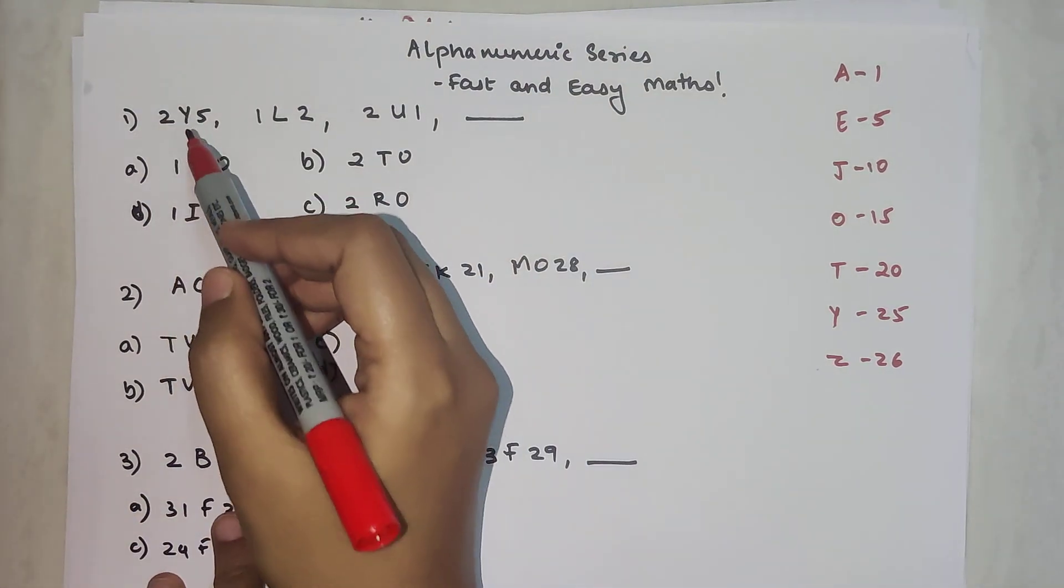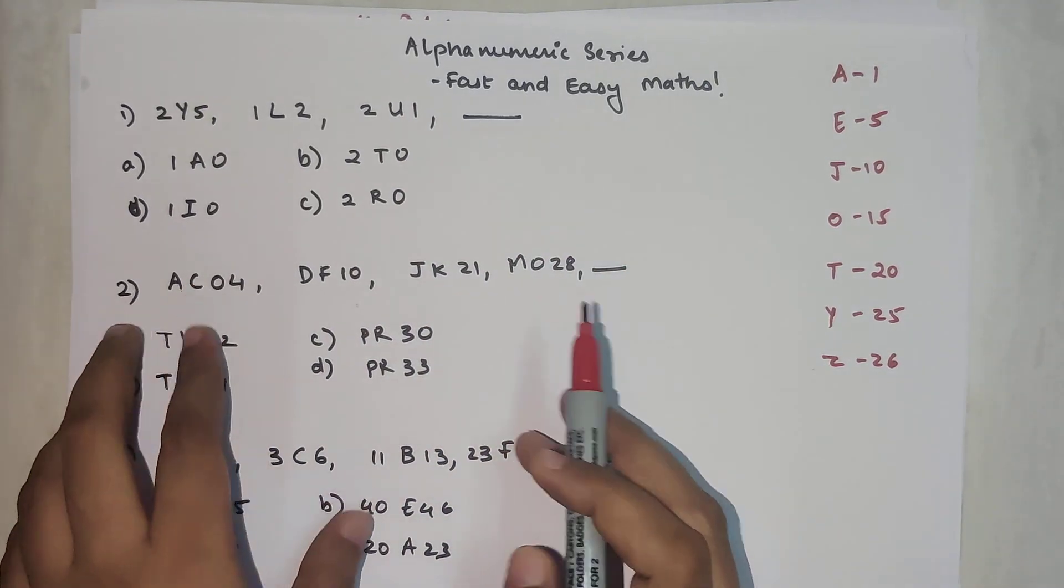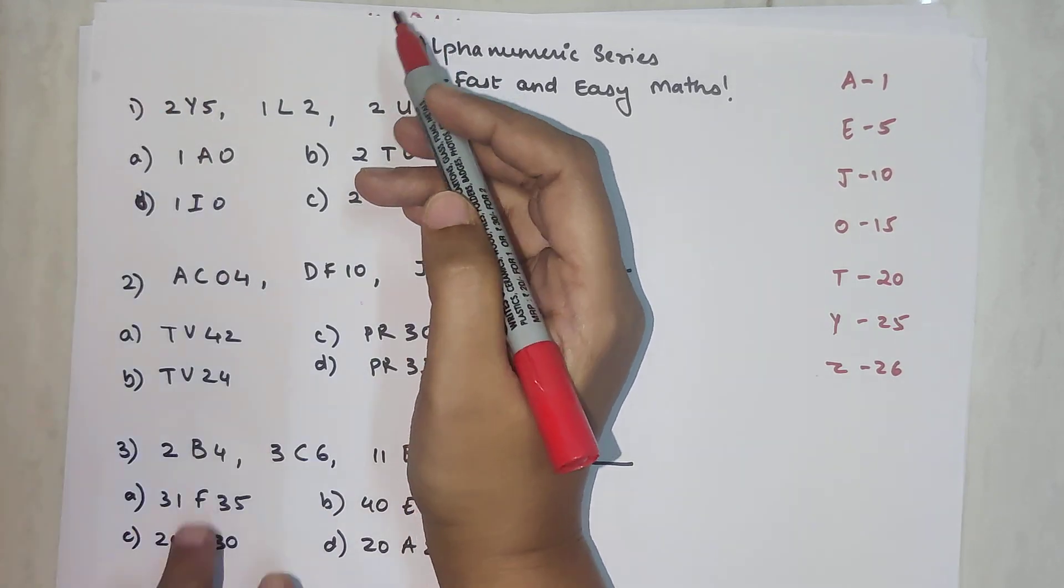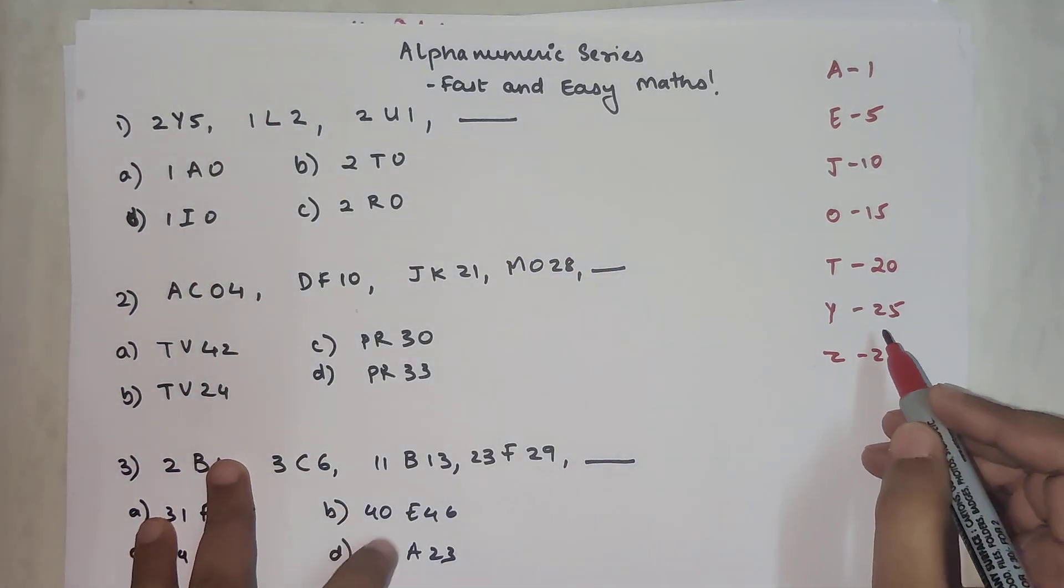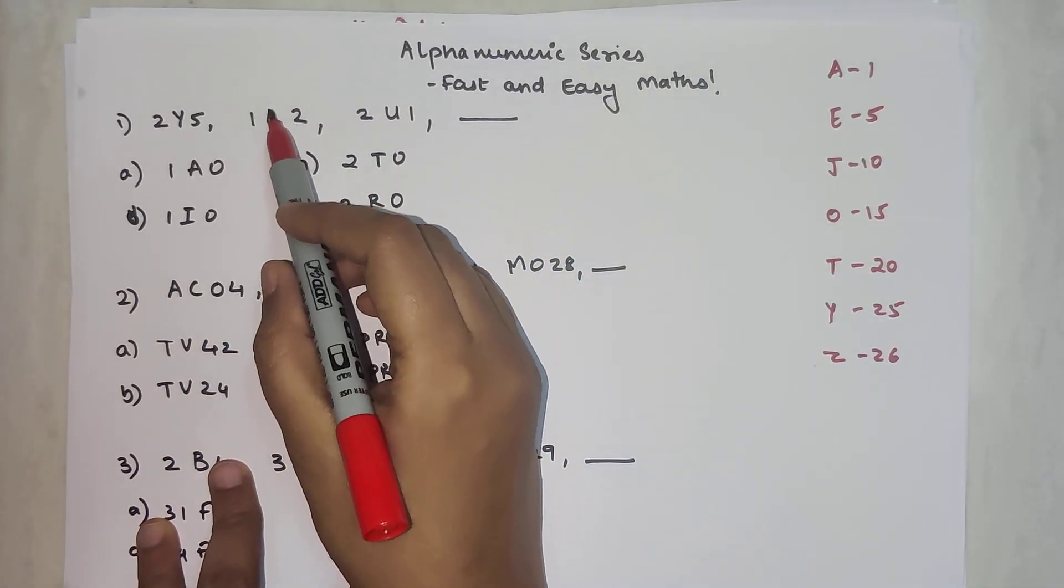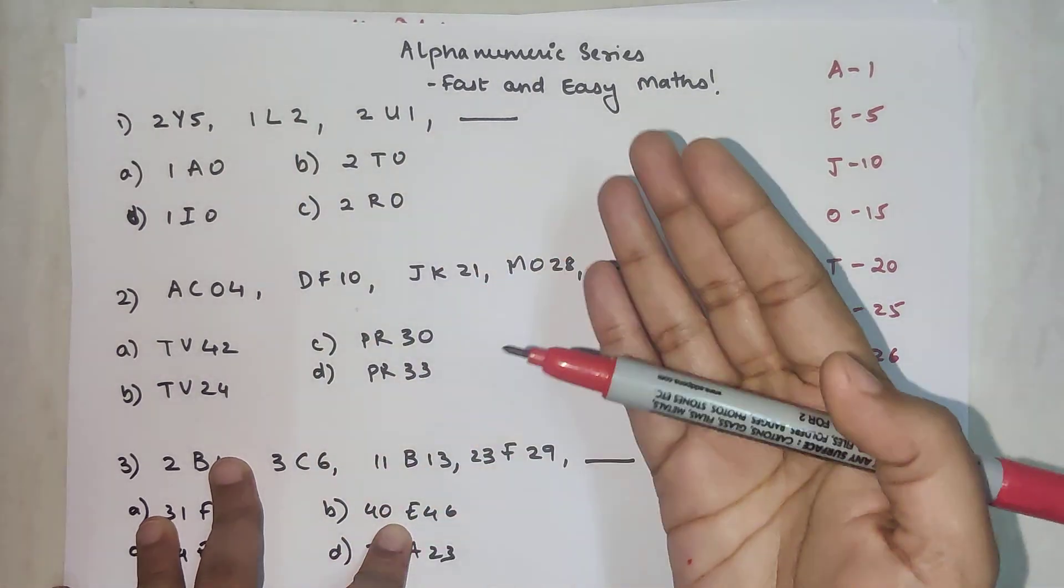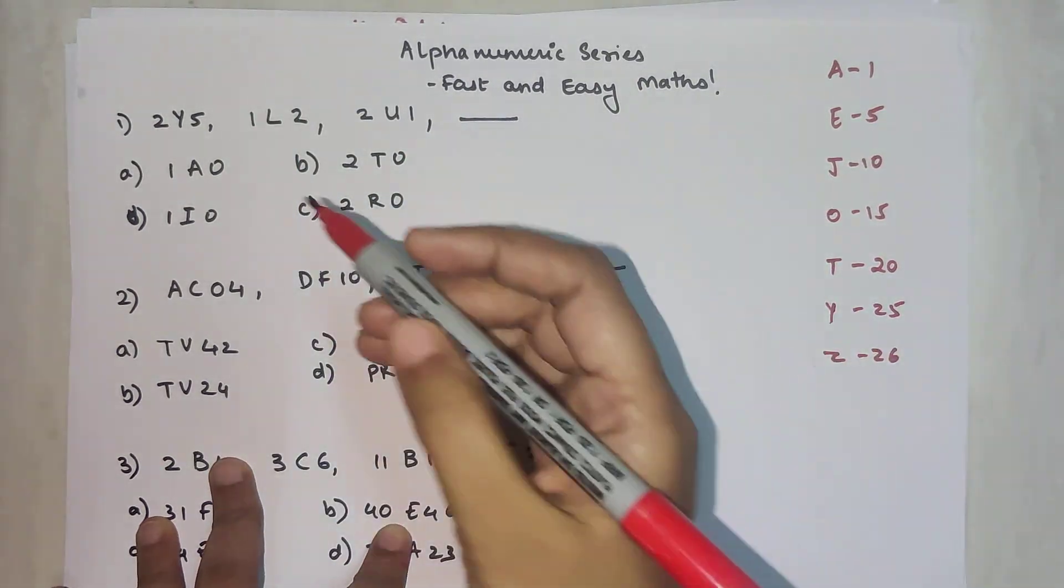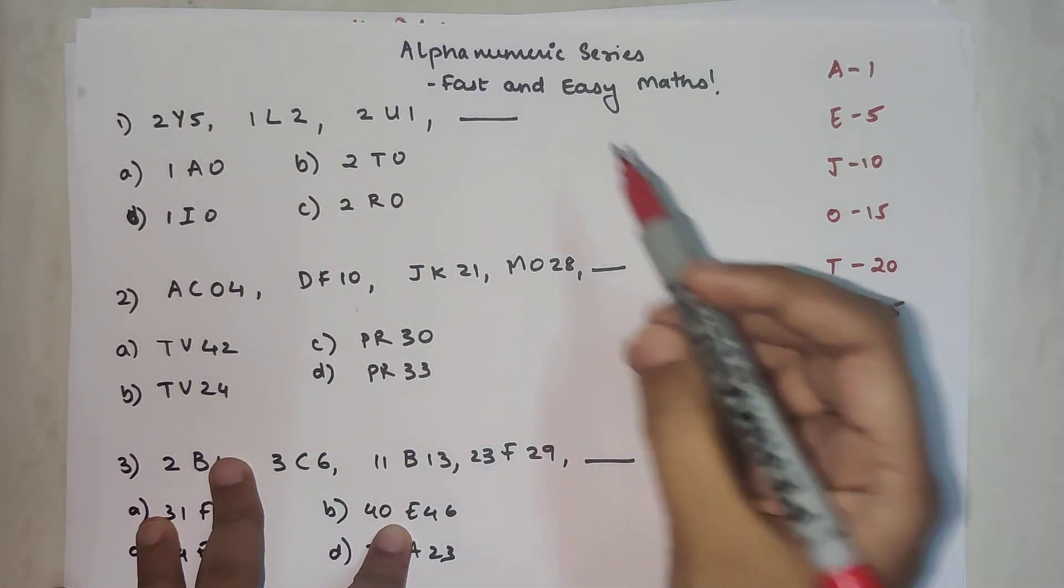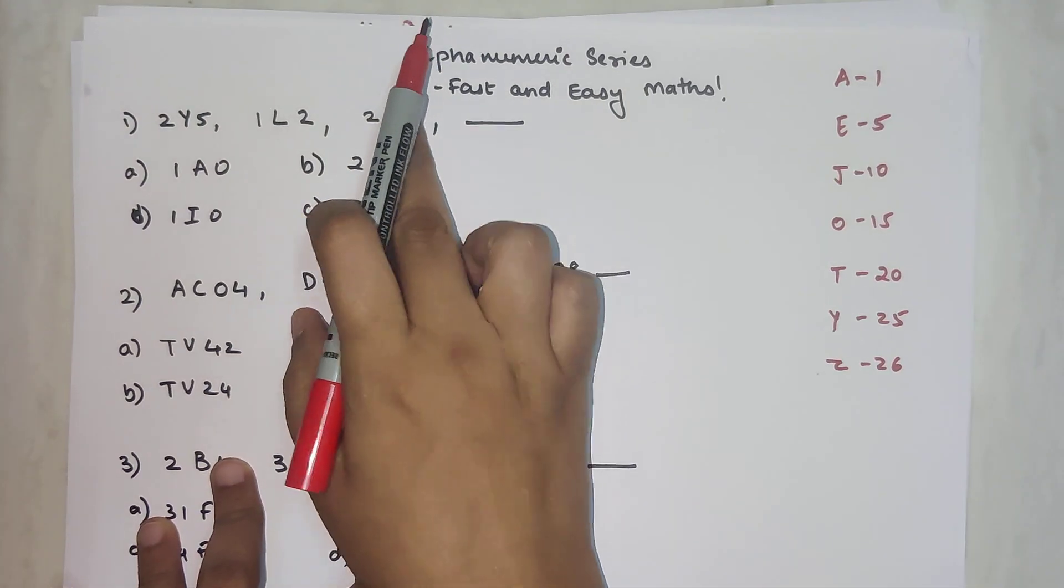Without wasting further time, let's start with the very easy one. First, we have 2Y5, 1L2, and 2U1. If you remove Y from between, we have twenty-five, and we know that twenty-five represents Y. Similarly, if you remove L from between we have twelve, and J is ten, K is eleven, and twelve is L. T is twenty, so U is twenty-one, and you have twenty-one when you remove U from between. So that is your pattern.